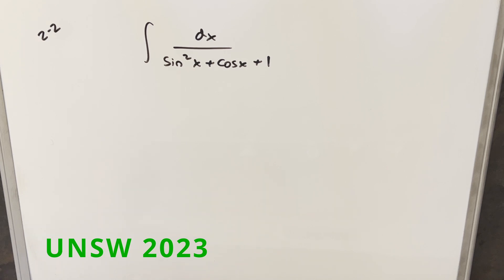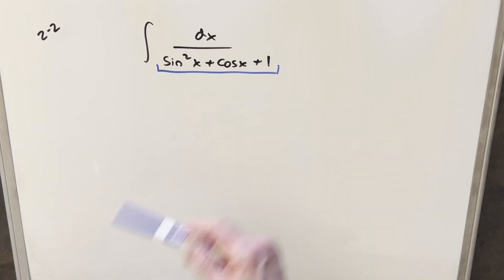We have the integral of one over sine squared x plus cosine x plus one dx. Just looking at the denominator, I was thinking this is really similar to another kind of problem you may have seen in the past that's a bit easier. Let's just look at that easier example.